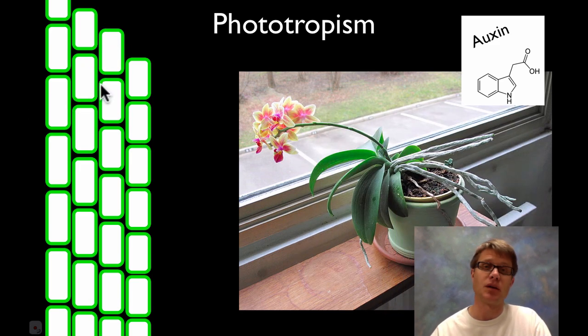Likewise if auxin moves up to the top, it's going to make it go farther and farther, it's going to grow straight up. And so it's a great way for them to know which way the light is.